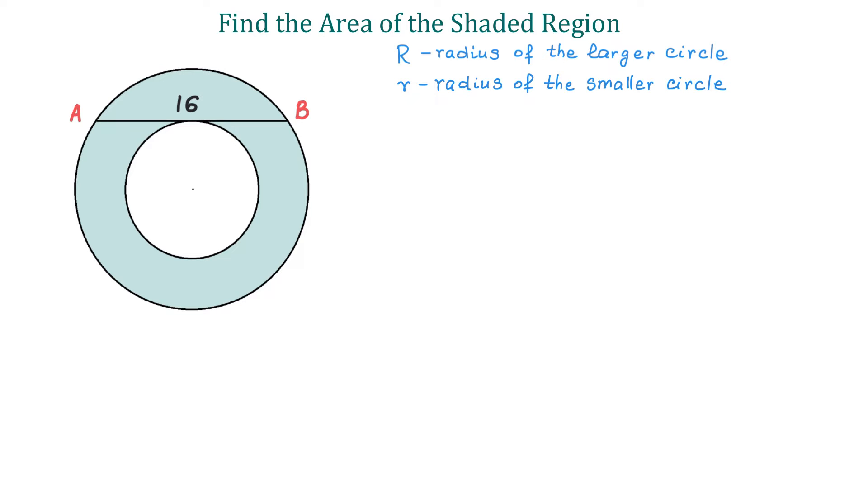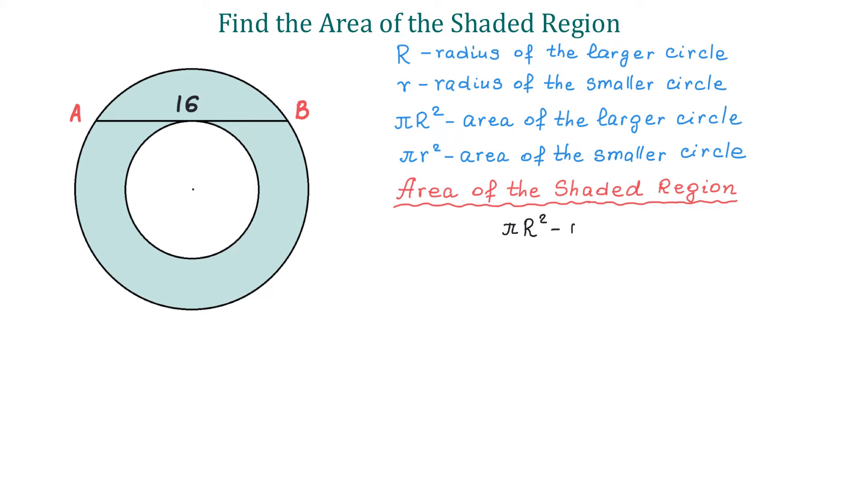Then the area of the large circle will be πR² and the area of the smaller circle πr². The area of the shaded region will be πR² - πr².